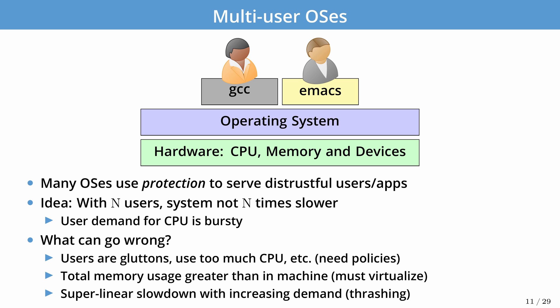This can go wrong in three main ways. First, users could abuse the resource — running a Bitcoin miner while another user is trying to work — so we need policies to ensure each user gets a reasonable share. Second, they might use too much of a limited resource like memory; we deal with this by virtualizing that resource — pretending we have more than we do and doling out a reasonable fraction to each application. Third, we might hit a pathological case with super-linear slowdown because demand is too high.